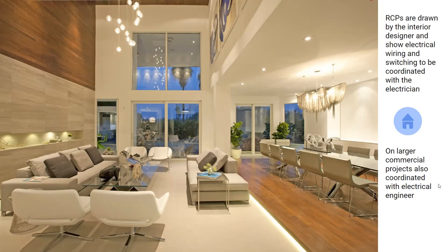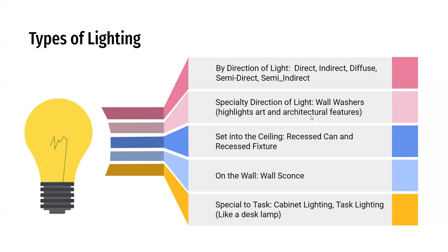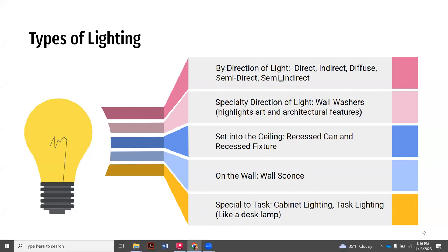On a much larger commercial project, you'll often have an electrical engineer on the job — you're still working with them, but they're clearly leading because there are a lot more pieces involved, including fire safety. A lot of times lighting is described by the direction the light is going to go: direct, indirect, diffuse, semi-direct — there are lots of options there.